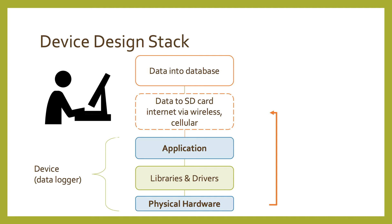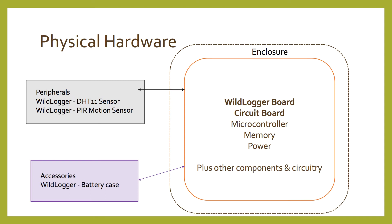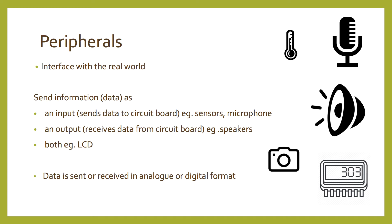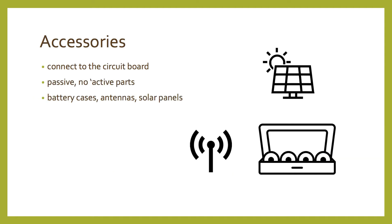So let's go through in more detail the physical hardware. The physical hardware is made up of three elements: a circuit board that controls everything, peripherals that attach to the circuit board and either send or receive data, and accessories that also attach to the circuit board but are less active. Peripherals interface with the real world and include things like temperature sensors, cameras, microphones, and speakers. They connect to the circuit board and send info as an input or receive info as an output, or they do both, in analog or digital format. Accessories are more passive and include things like antennas, battery cases, and solar panels.